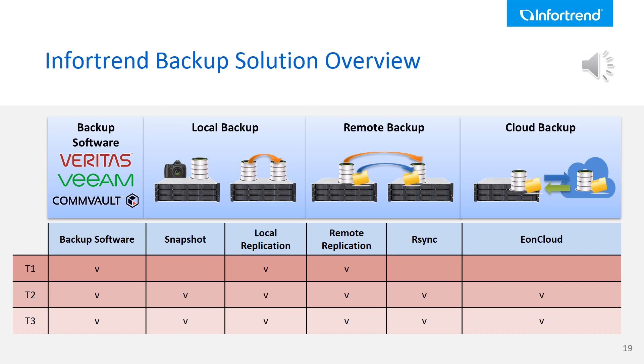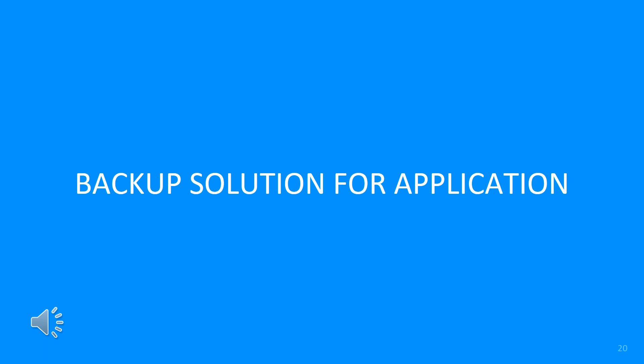After introducing the backup options InfoTrain offers, let's summarize by looking at the services support table. The backup software and block-level local and remote replication can achieve Tier 1 RTO and RPO backup solutions, while other services achieve Tier 2 RTO and RPO backup solutions. This next chapter provides an overview of recommended backup services for different enterprise IT applications, like database, surveillance, virtualization, and more.